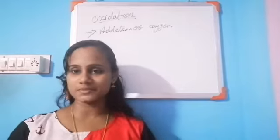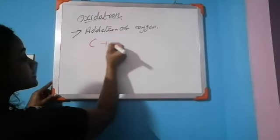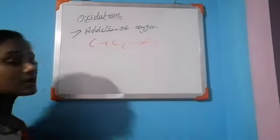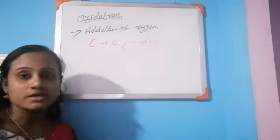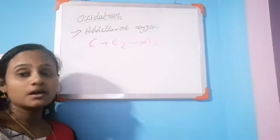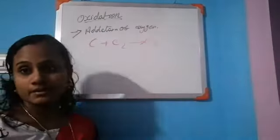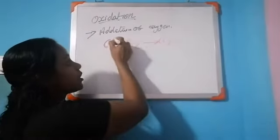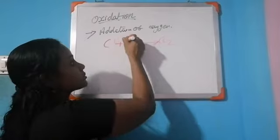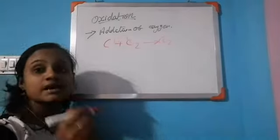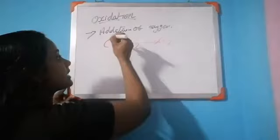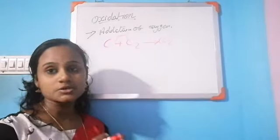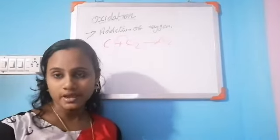We can check some examples. Carbon plus oxygen to form carbon dioxide. Here carbon is an element, so oxygen is added to the carbon. That is addition of oxygen, so this is an oxidation reaction.